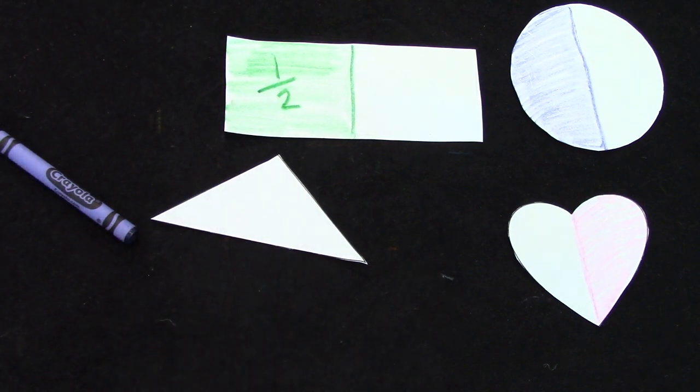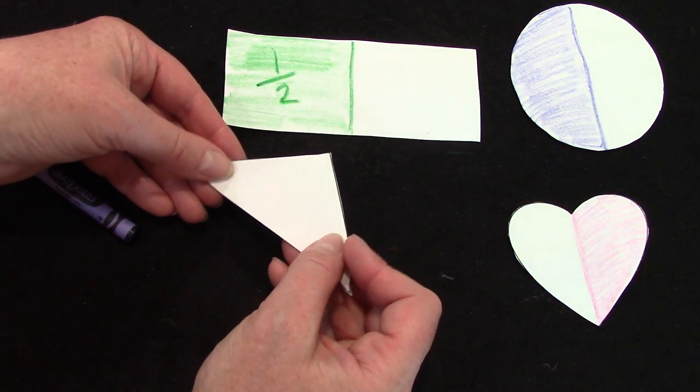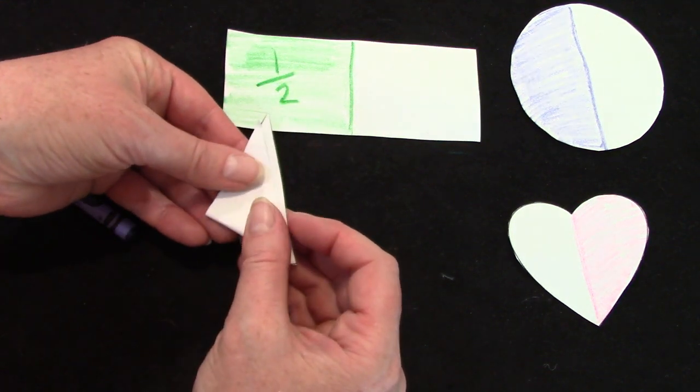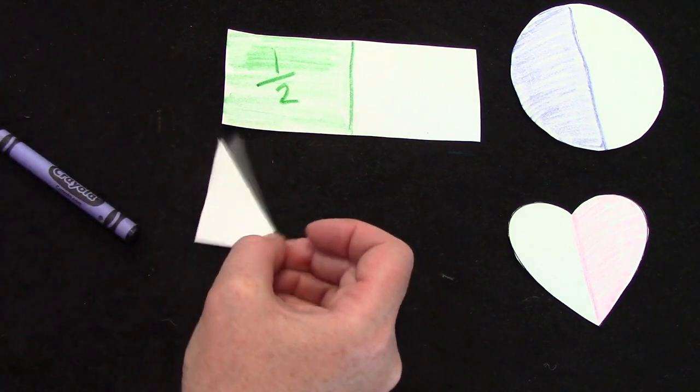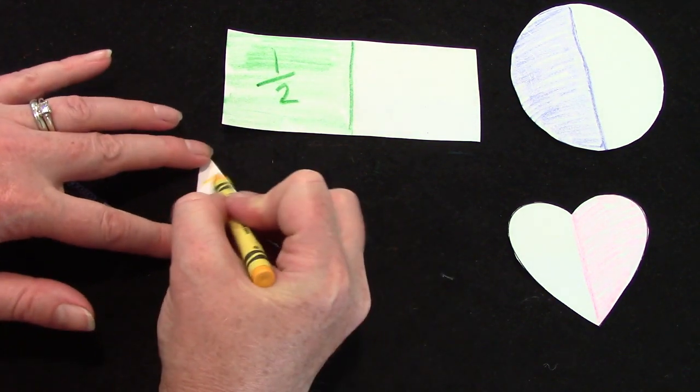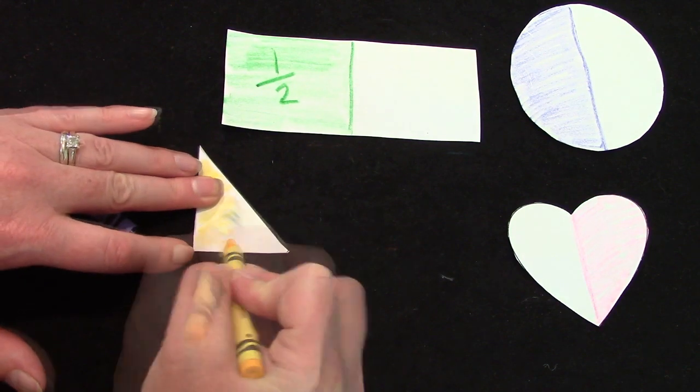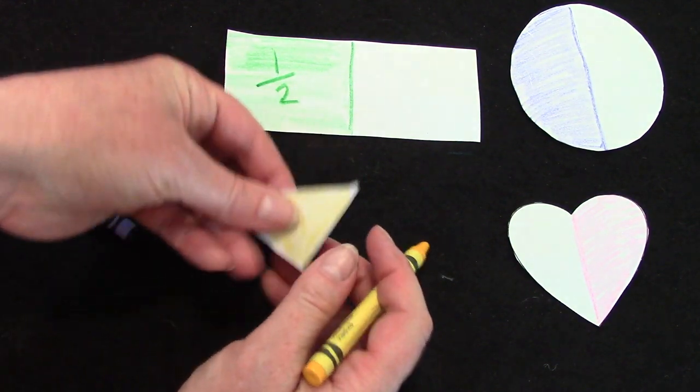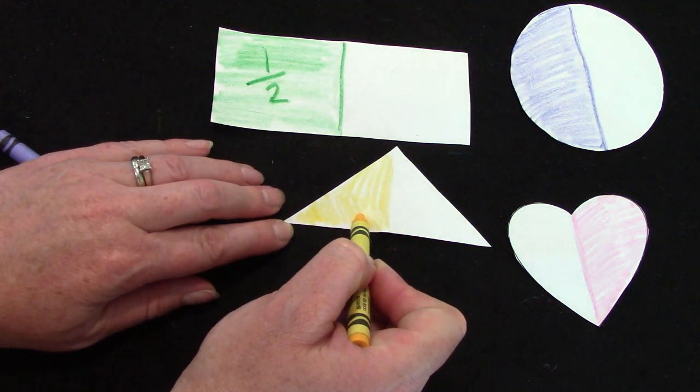Let's take a look at this triangle. This triangle, there's really only one way that we could fold it. So I'm going to fold it this way, and then I'm going to color this one nice bright yellow. I have colored one half of the triangle.